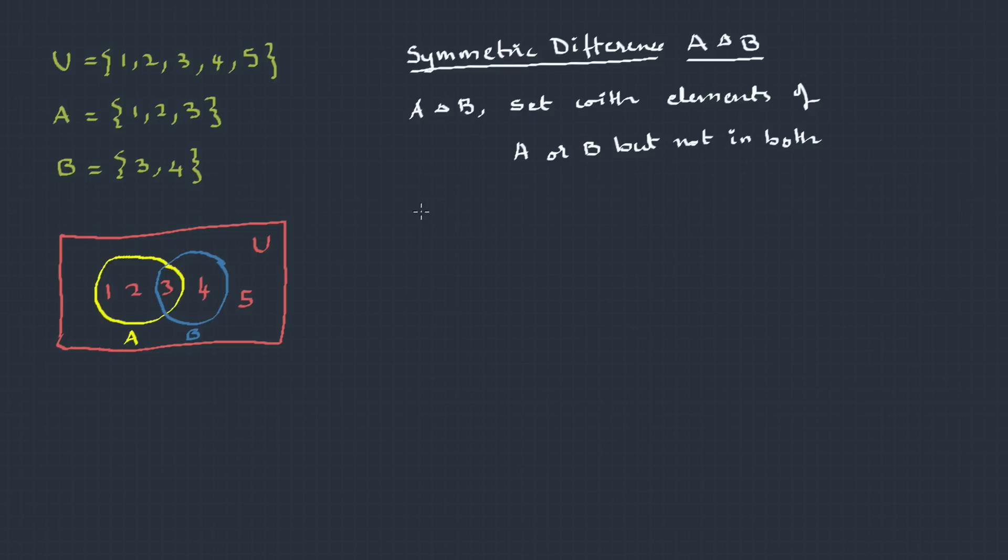Symmetric difference. A delta B. It's a set with elements of A or B but not both. That's x such that x belongs to A or x belongs to B.